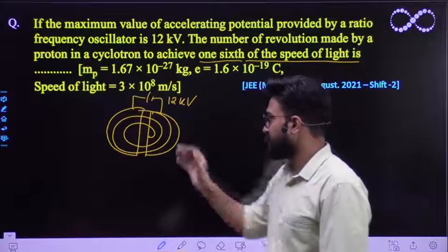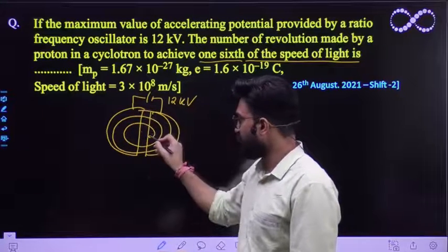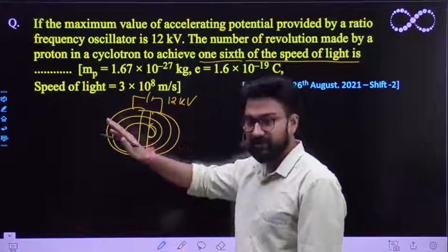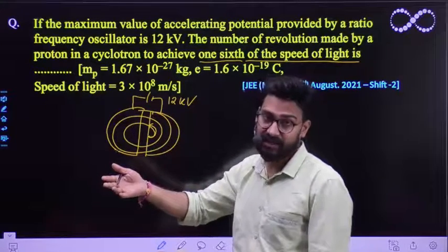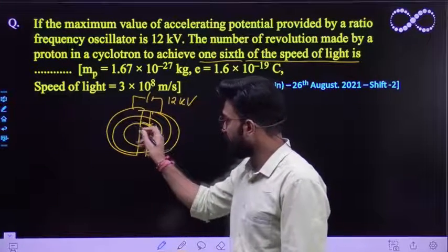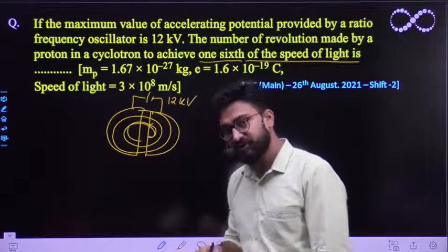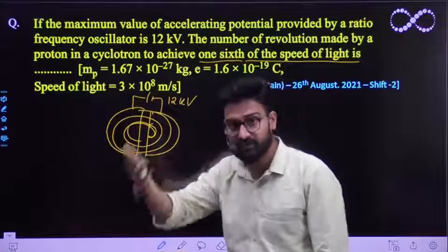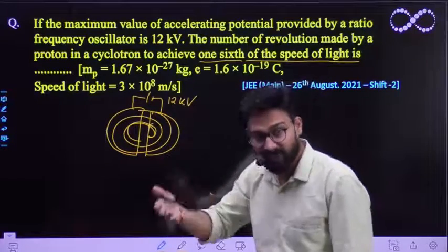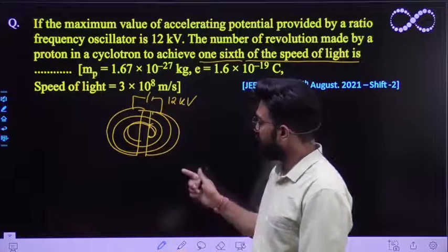We already know that this cyclotron consists of two Ds. For each half revolution, the work done by this cyclotron would be increasing its kinetic energy of that charge particle. For half revolution, and for complete one revolution, the work this cyclotron will do double the work. So the work done by the cyclotron, the double work done by the cyclotron, would be the increase in its kinetic energy of the charge particle.